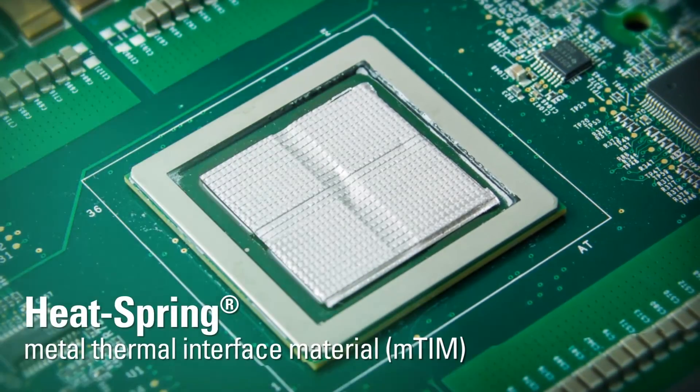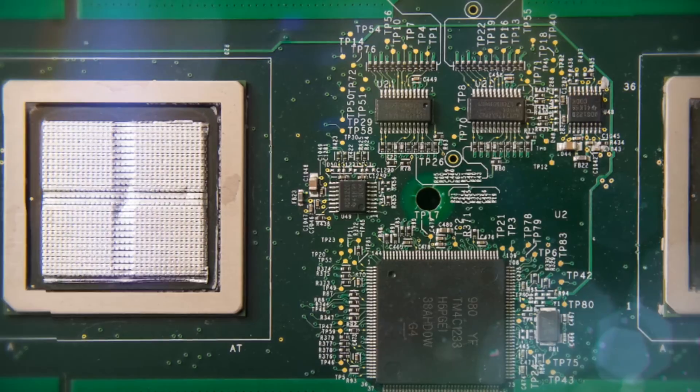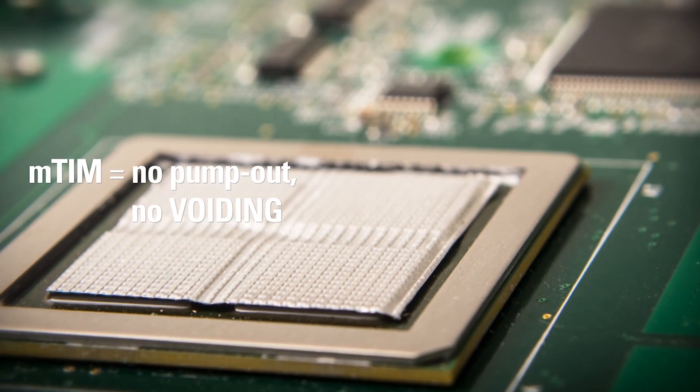Heat spring is a metal thermal interface material that is compressed between the device and the heat spreader. Because it's a solid piece of material, it's not prone to pumping out like a grease would. It also, because it's metal, has a very high thermal conductivity.